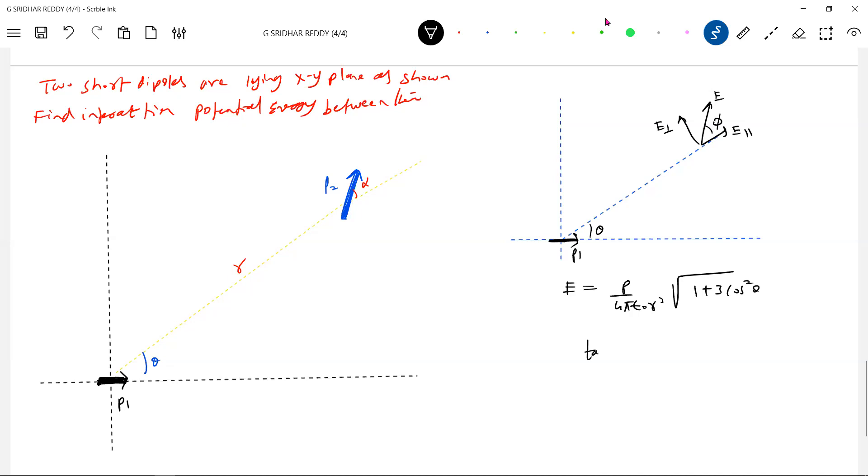Then angle phi is given by tan(θ/2). I know dipole moment P2 is making an angle, but we want a vector. This is fine to some extent, but rather than this, it may not help you because we want the interaction potential.